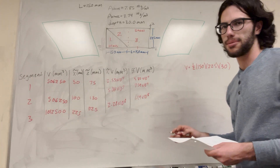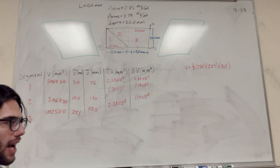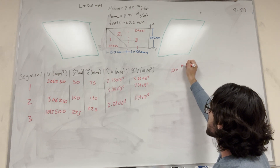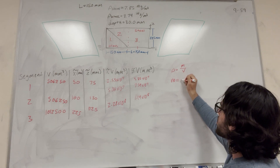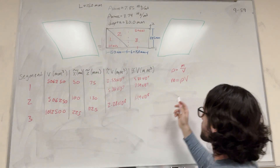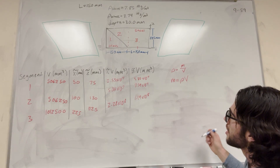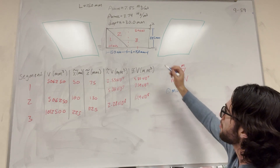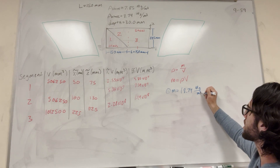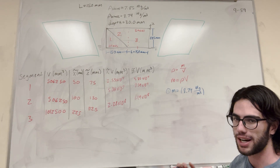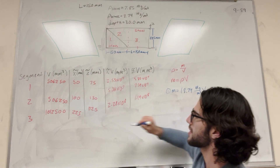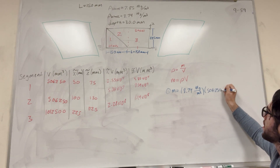We've filled in our entire table, so now it's time to do the math. Part A asks for the mass of the entire thing. We're not given masses directly, but we have densities. Density equals mass over volume, so mass equals density times volume. We found the volumes of each segment and know their densities. Starting with segment one, the brass triangle: the density of brass is 8.74 megagrams per meter³, and the volume is 506,250 mm³.